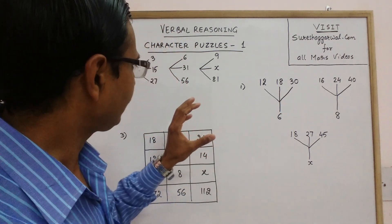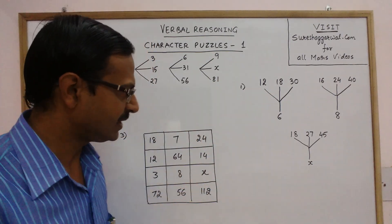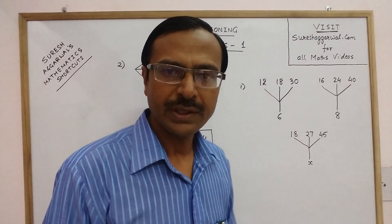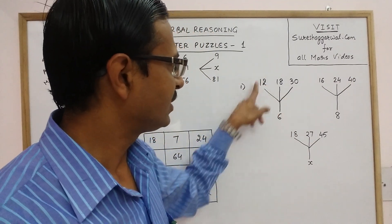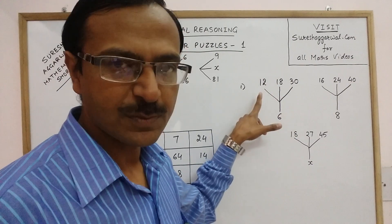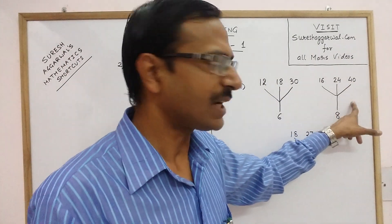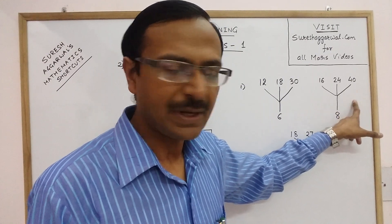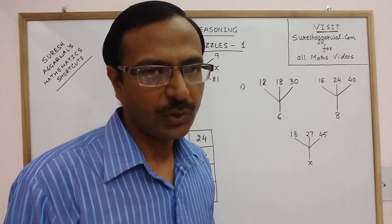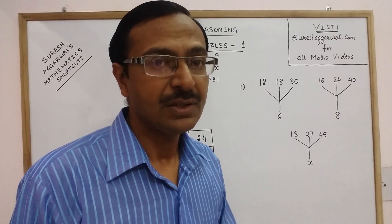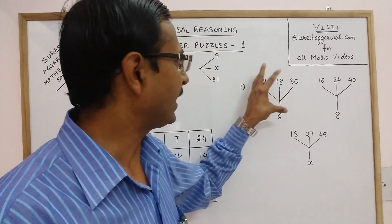Now see here, there is x here, there is x here, there is x here. Now we need to identify the pattern through which the first part of the first problem is made. Similar pattern has to be observed in the second one and we have to apply that pattern on the third one to obtain the value of x. So it is all about identifying the rule through which these numbers are written in a given character.